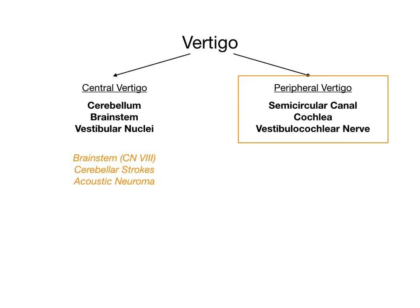In today's video, we're going to focus on peripheral vertigo, because classically this is what comes up on exams and what patients often come into the hospital complaining of. For completeness, central vertigo is due to brainstem strokes, cerebellar strokes, infarctions in that region, and acoustic neuromas — those are the things to watch for on your exam.